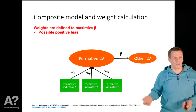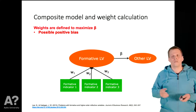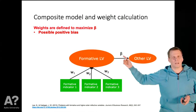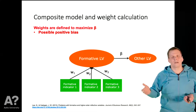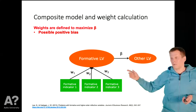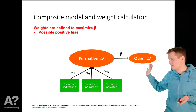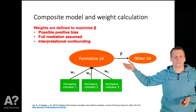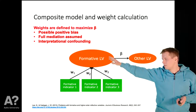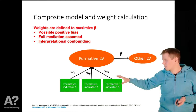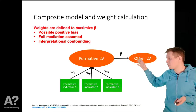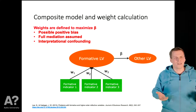There's also a possible positive bias. Another problem: if we set these weights so that beta is as large as possible, then the weights actually depend on whatever the other latent variable is. This leads to a problem called interpretational confounding in this literature — the meaning of the latent variable that is supposed to be caused by the three formative indicators actually depends on what other latent variables we have in the model, and that's undesirable.